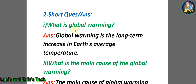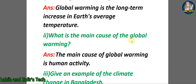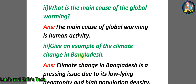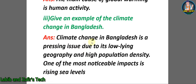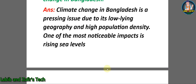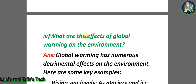Now students, let's go through some short question answers. Number one: what is global warming? Answer: global warming is a long-term increase in Earth's average temperature. Number two: what is the main cause of global warming? Answer: the main cause of global warming is human activity. Number three: give an example of climate change in Bangladesh. Answer: climate change in Bangladesh is a pressing issue due to its low-lying geography and high population density; one of the most noticeable impacts is rising sea levels.